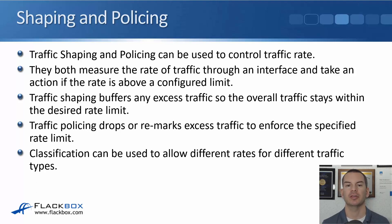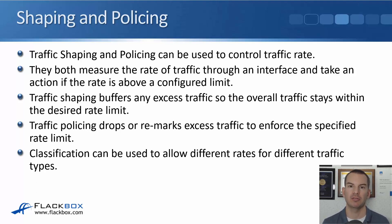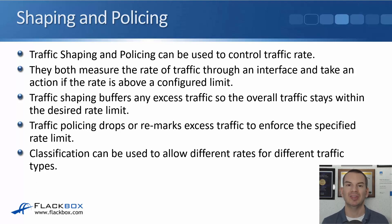Traffic shaping and policing can be used to control traffic rate. They both measure the rate of traffic going through an interface and take an action if the rate is above a configured limit. If you look at a router, it knows the amount of traffic going through its interfaces — you can see that with a show interface command — so you can configure it to take an action if it goes above a certain rate.